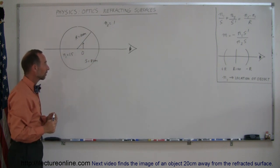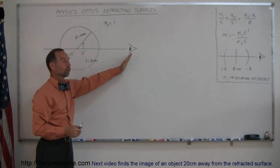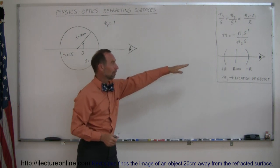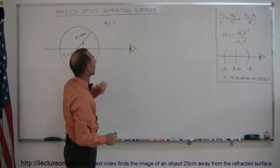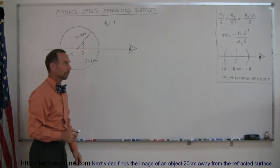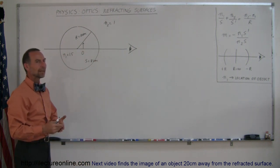So object distance is 8 centimeters, and then the observer is to the right of the ball, according to convention right there, and the index of refraction on the outside is 1, because it's air. So where will the image appear?